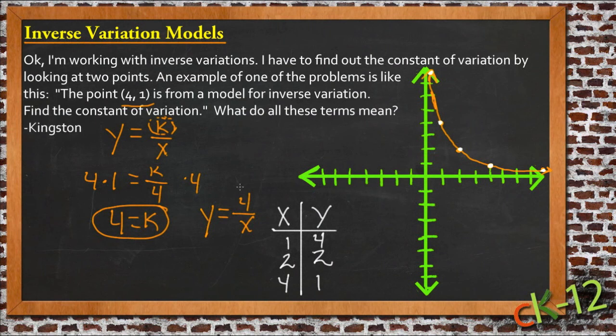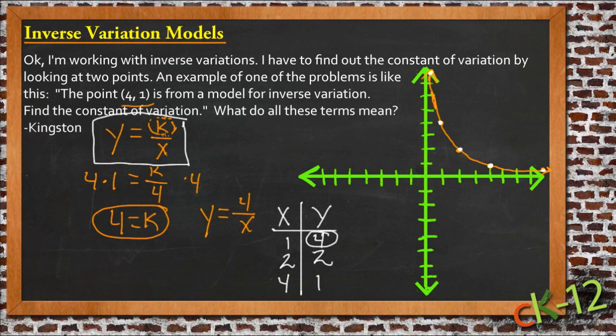So your inverse variation models are identified by one value increasing as the other one decreases, and vice versa. So your standard model is y equals k over x. And all you have to do is plug in the point that you're given, the values that you're given for x and y, to solve for k, or substitute in k, if that's what you're given, to find your x and y points.